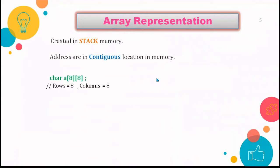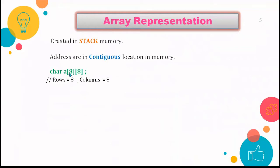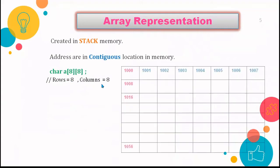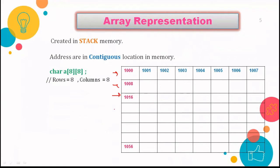I have defined an array where the data type is char, the name of the array is 'a', and there are eight rows and eight columns. Here this is your first row, this is your second row, this is your third row, and similarly this is the last row.